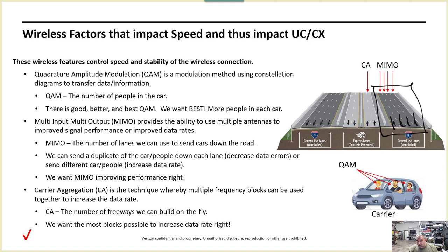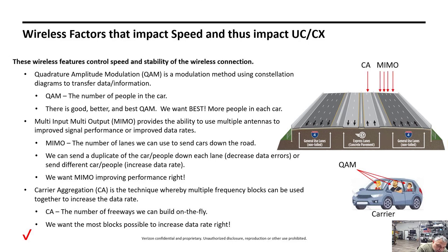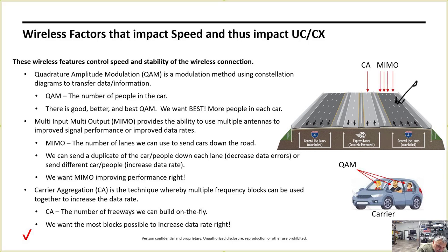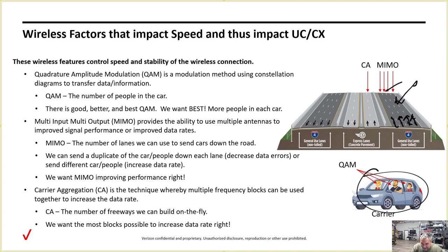Or we can copy and paste the same car into each lane. Why would we do that? We'd do that if our road — our RF signal — was bad. We'd make copies of the same car with the people in it, say four copies, and send them down each lane. We're hoping one of these cars makes it to the end, or maybe two half-cars make it and the receiver can reassemble them to get at least one complete car with all the data.